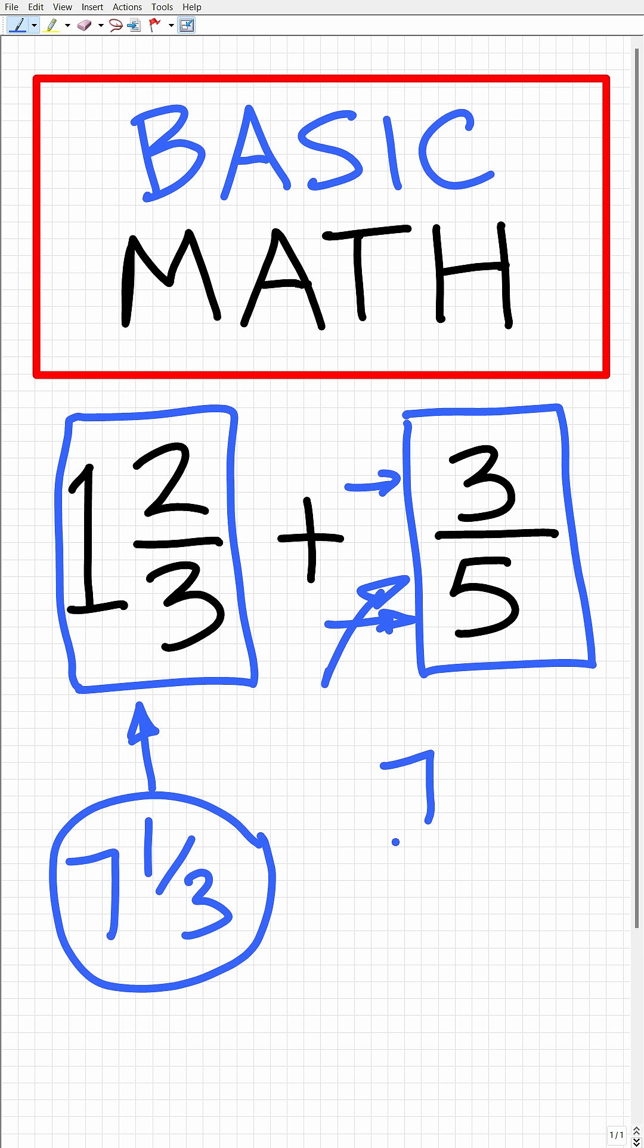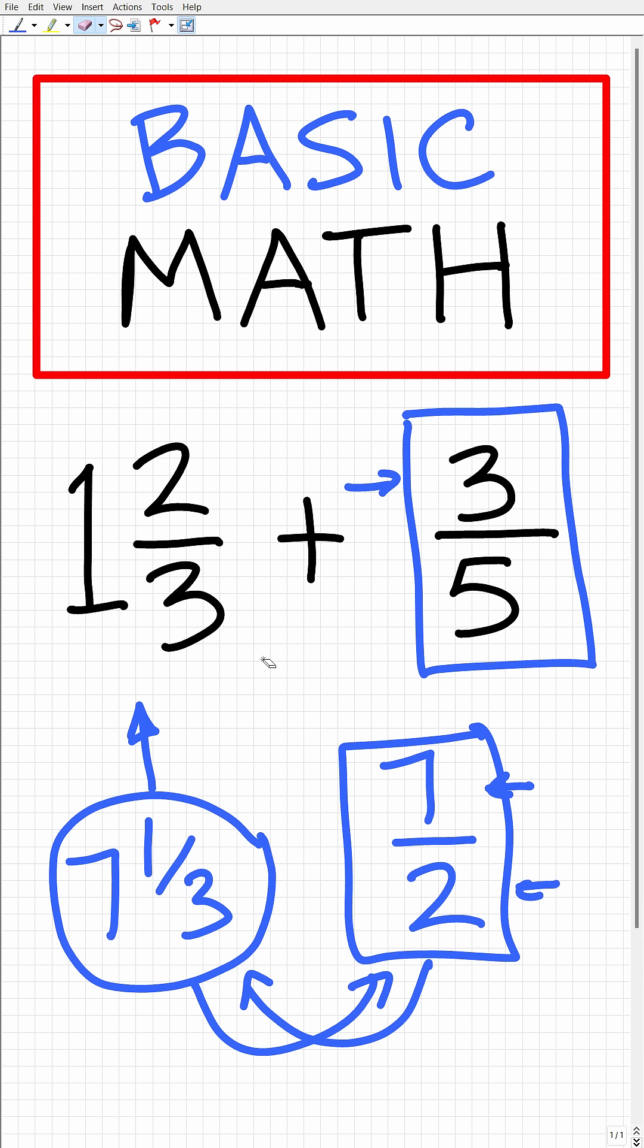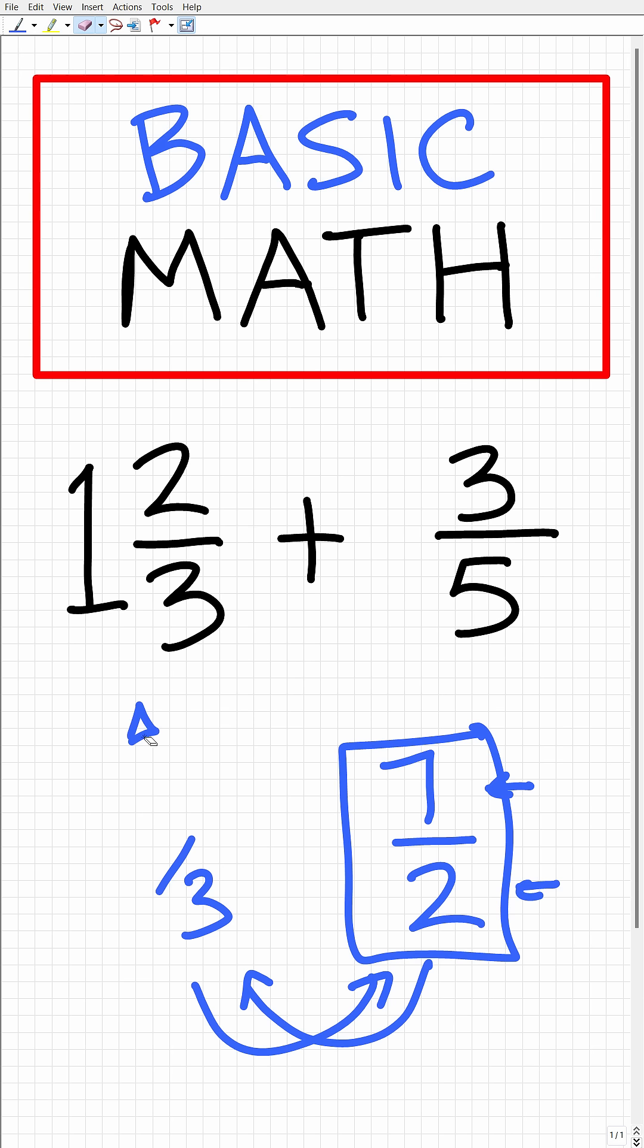But if I had a fraction where the numerator was bigger than the denominator, like in this example right here, well this is called an improper fraction. And we can convert improper fractions into mixed numbers and mixed number fractions into improper fractions, and this is what we're going to have to do in order to add these two fractions right here.